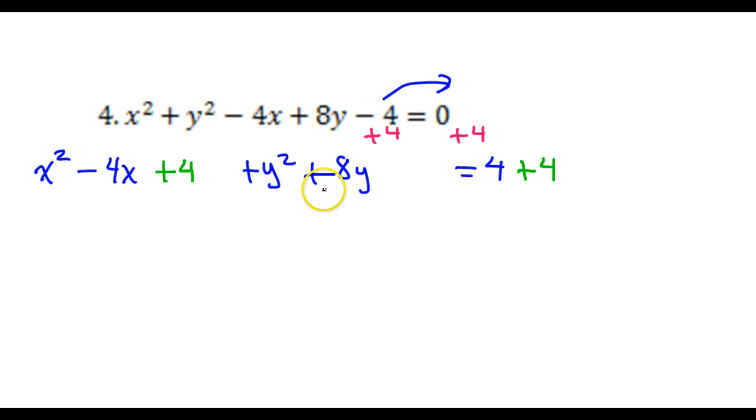And same thing here. Half the middle squared. Half of 8 is 4. 4 squared is 16. So I'm going to add that to the left and to the right.